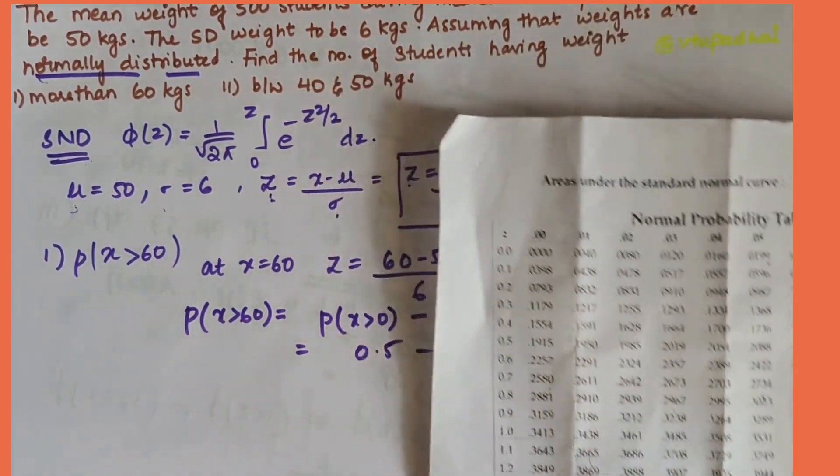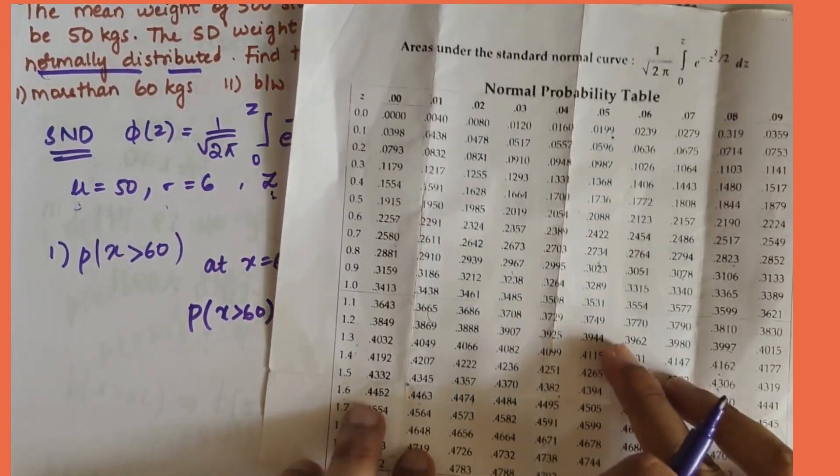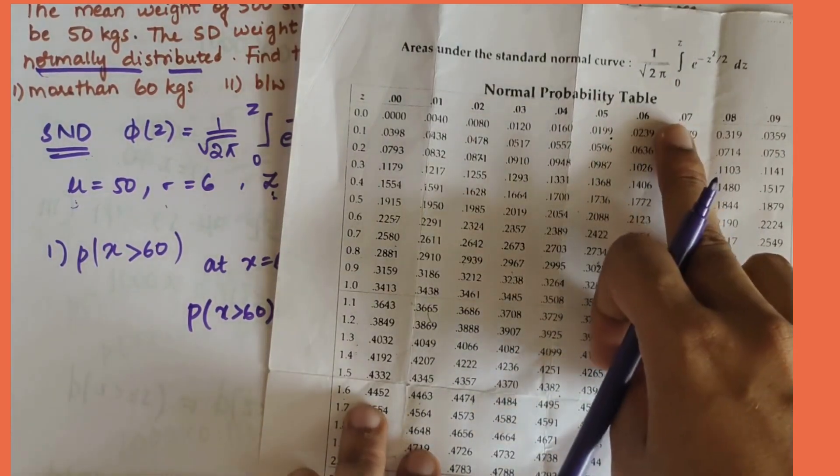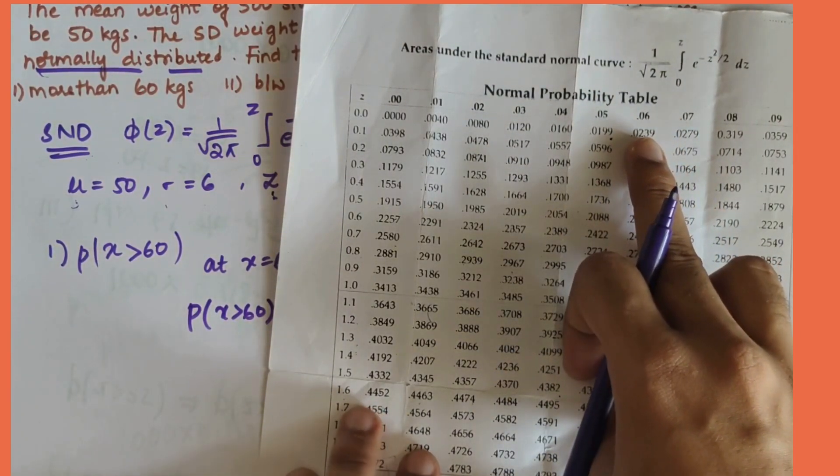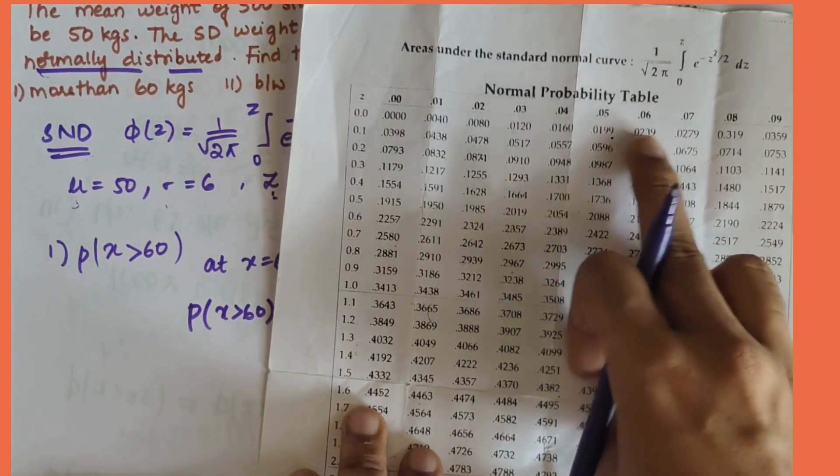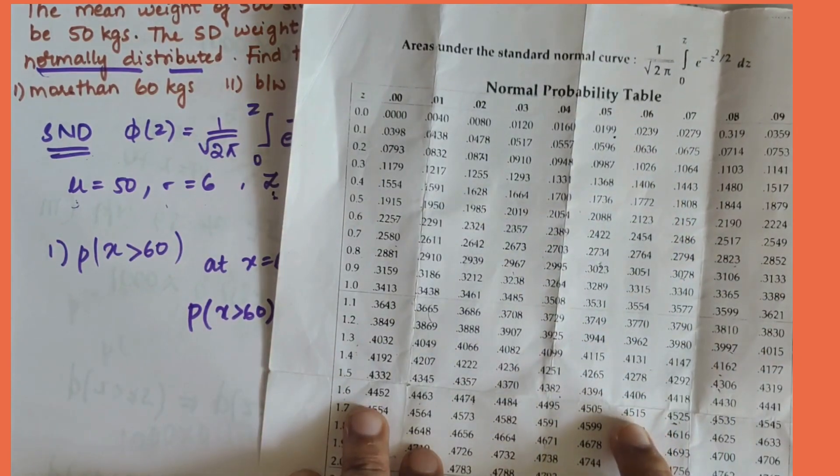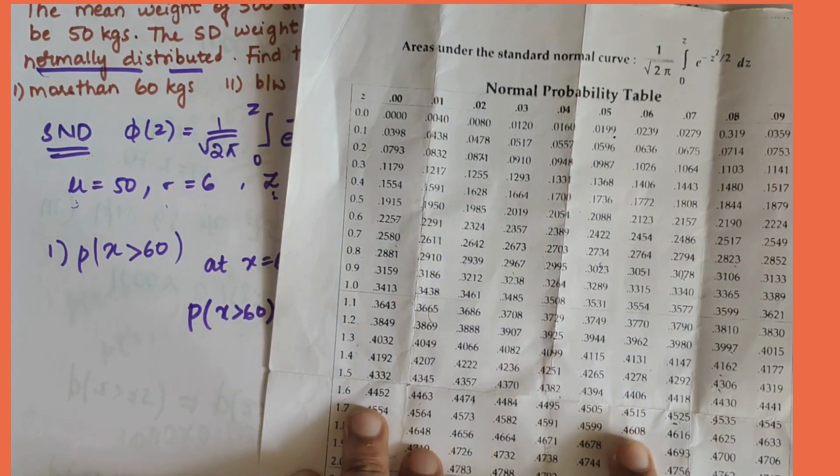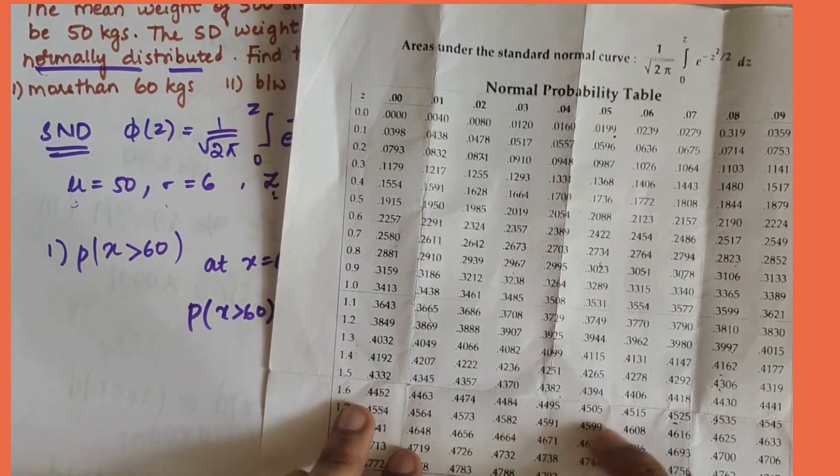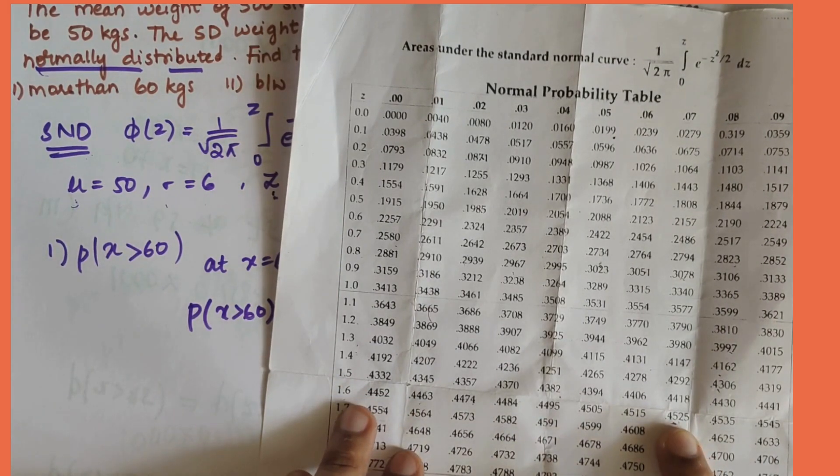I will refer to the normal probability table, and 1.667: 1.6 is here and 1 point again 6 is here, so it will be 0.4525.